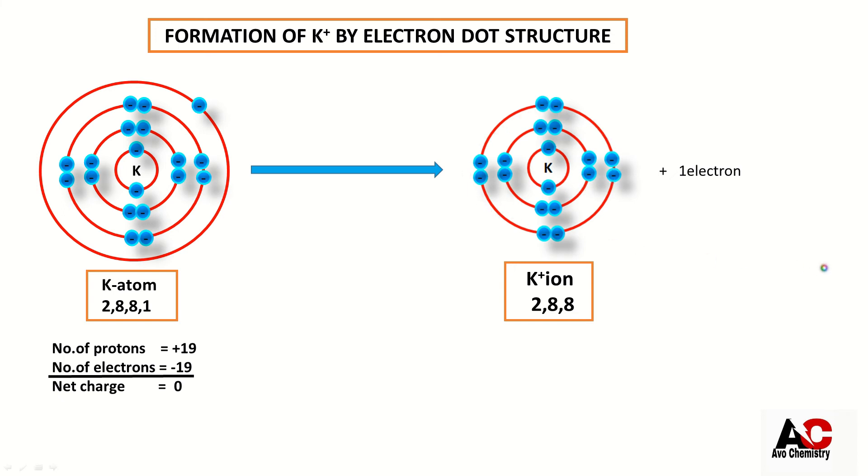But now it has got some charge because number of protons are 19, but number of electrons are now minus 18 because 1 electron has been removed. So net charge is plus 1.